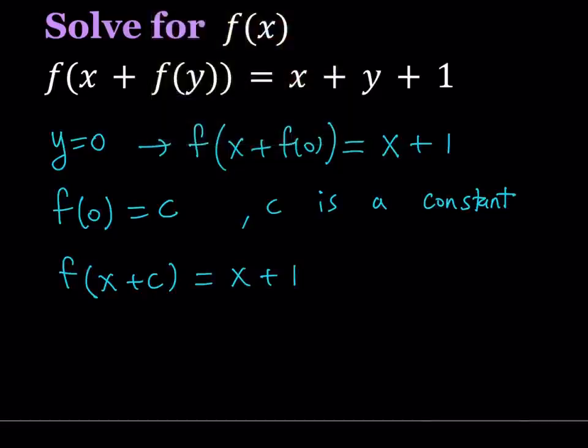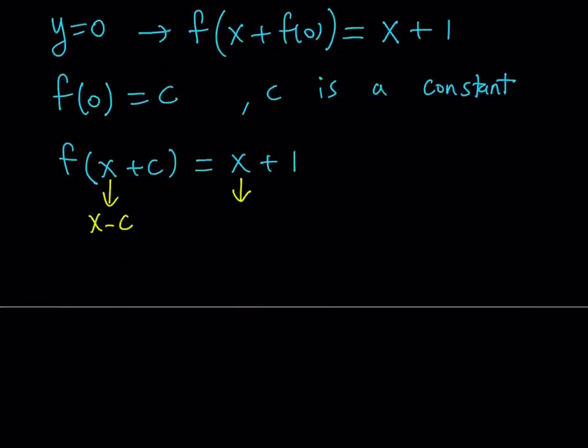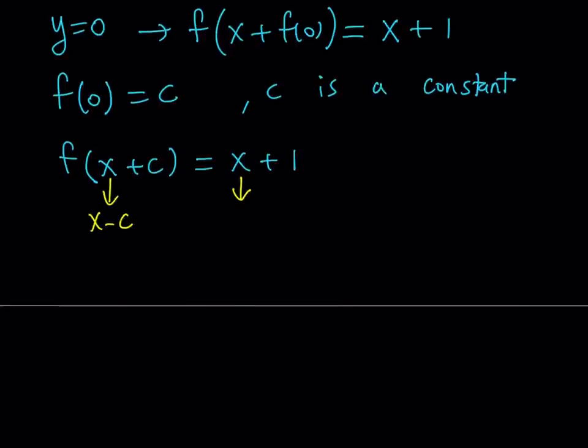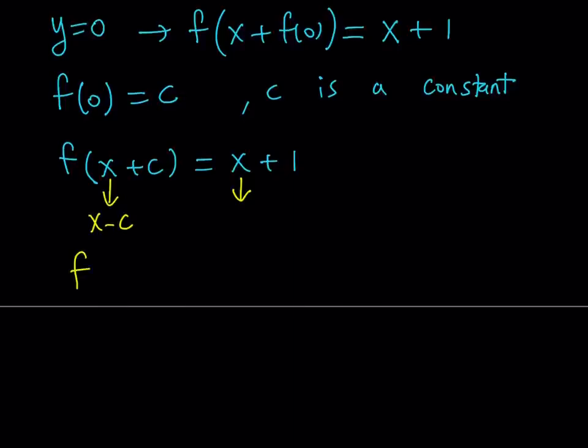So for that purpose, we do need to do the following. We're going to replace x with x minus c on both sides so that we can get f of x. So here on the left hand side, inside the parentheses, we get x minus c plus c which is f of x. And on the right hand side, since we are doing the same thing, we're going to be getting x minus c plus 1.